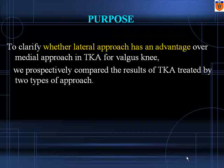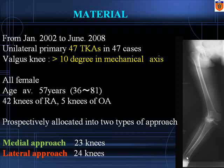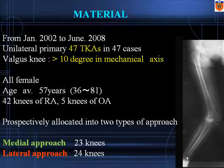We prospectively compared the results of two types of approach. 47 knees with valgus deformity of 10 degrees in mechanical axis — all female, mean age 57 — rheumatoid arthritis in 42 and osteoarthritis in 5. They were allocated into medial or lateral approach. Knees with severe deformity of 30 degrees or flexion deformity of 40 degrees and large defect requiring semi-constrained implants were excluded from this study.